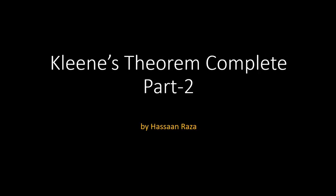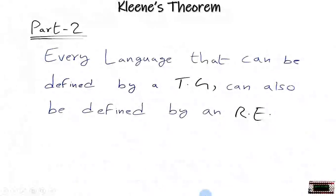So the title of this video is Kleene's Theorem Complete part 2. Part 2 of Kleene's Theorem says that every language that can be defined by a TG, which is transition graph, can also be defined by an RE, which is regular expression.